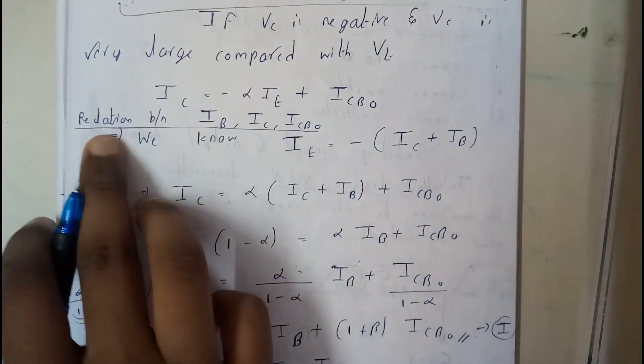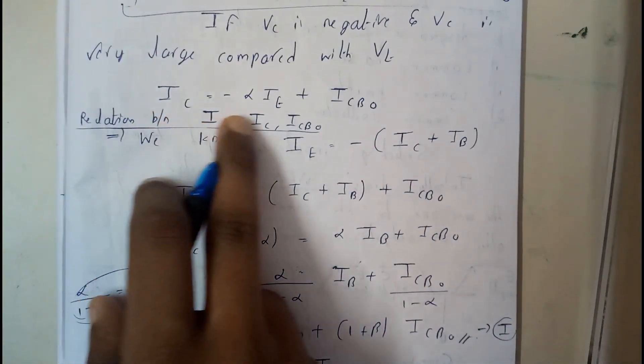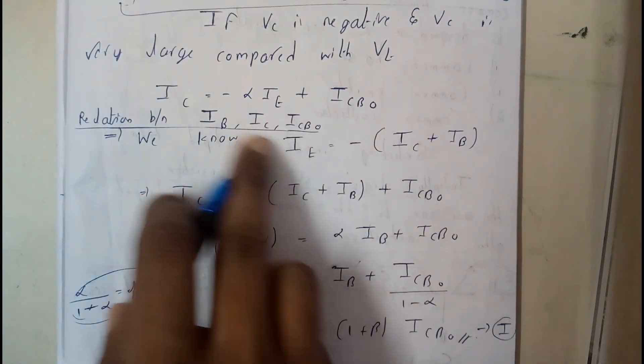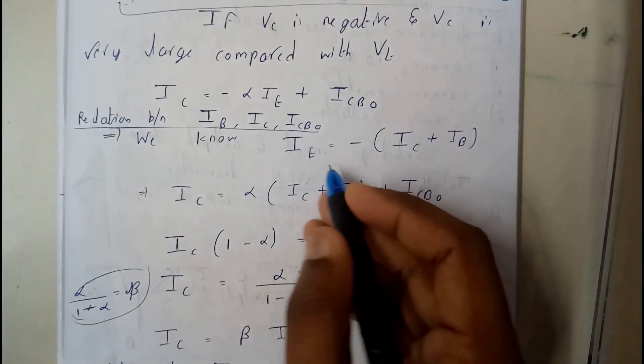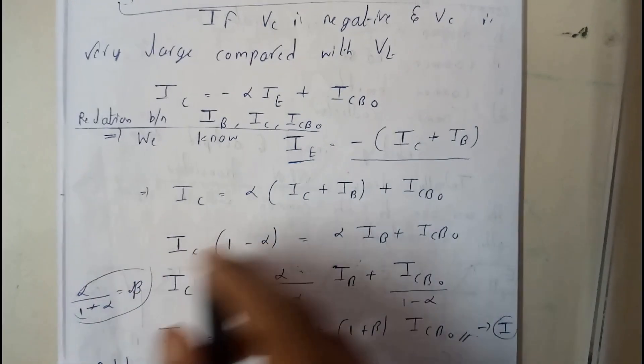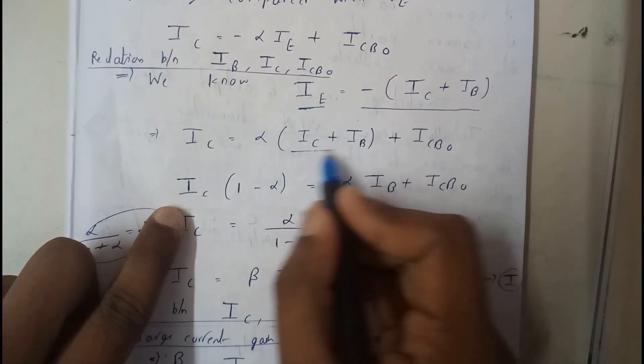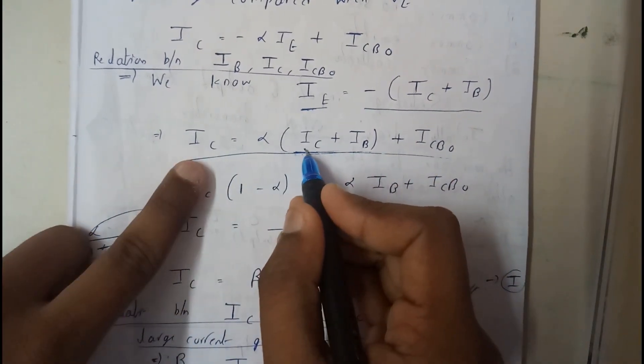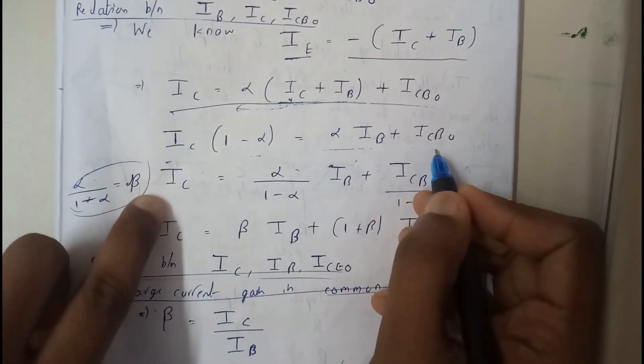Further moving on, relation between IB, IC and ICBO. Here we need to include IB. IB is not there, IC is there, ICBO is there. So we have a formula that IE is equal to minus of IC plus IB. I hope everyone knows that. So basically I will be just substituting it, substituting in the place of IE. So I got like this now. I will be shifting this, this side and I will be taking IC common, so I got this now.